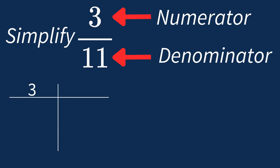For 3, the factors are 1 and 3. For 11, the factors are 1 and 11. So in this case the largest common factor is 1.